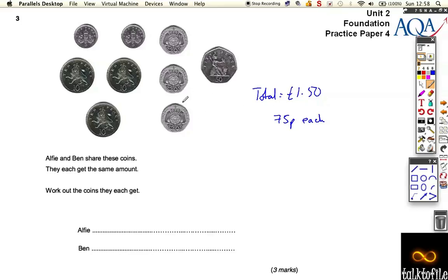The other way to do it is you could kind of count it out so they get the same. So imagine that Alfie got the 50p and then for Ben to get the same he has to have a 20, a 20 and a 10. So he has to have a 20p, a 20p and a 10p.